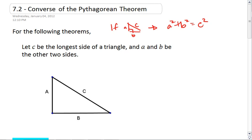The converse takes us the other direction. It tells us if a squared plus b squared equals c squared, then the triangle must be a right triangle. And we'll see that below.